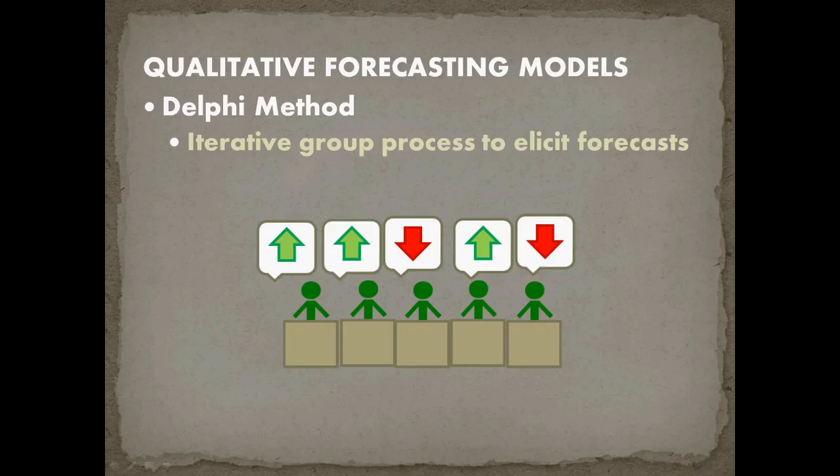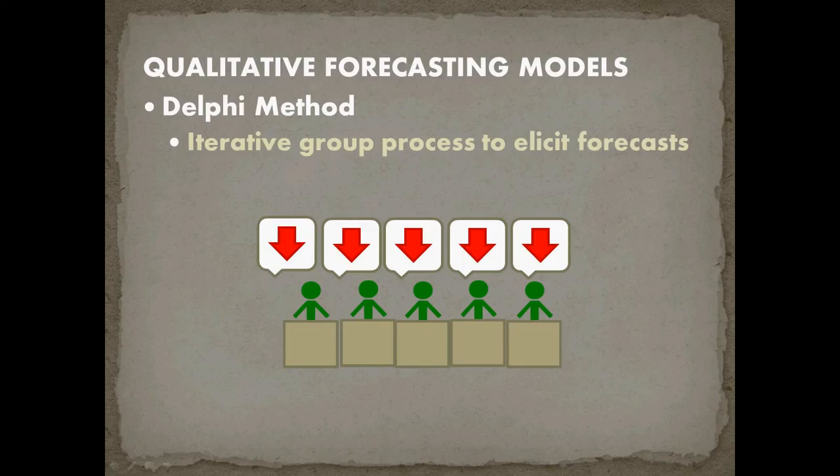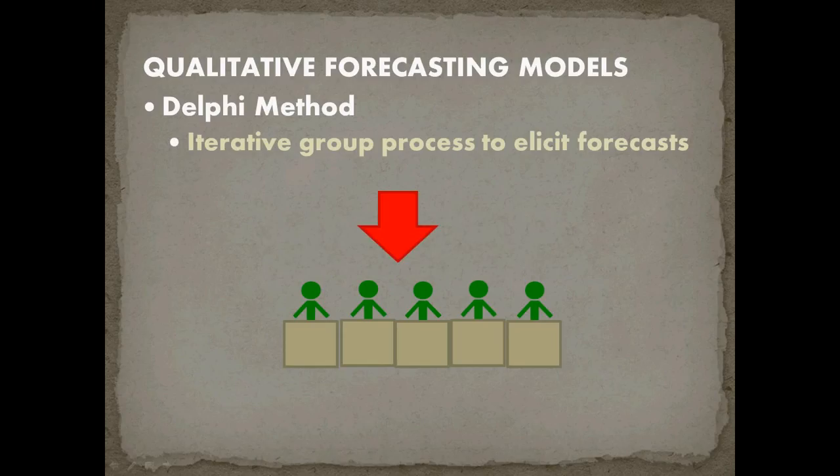Once they have this discussion they then revote and make a new forecast and then they can talk about it further and we can step through this again and have them make a second forecast. If you get consensus usually that's when the Delphi method stops and so in this case our forecast is that it's going to go down.